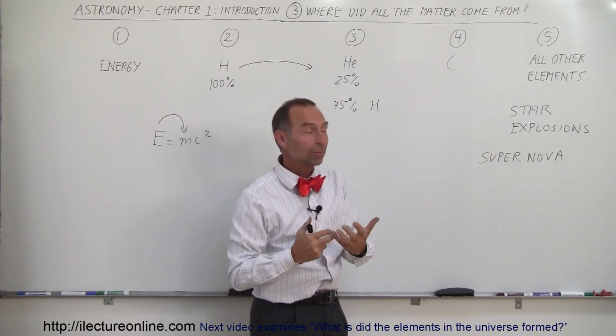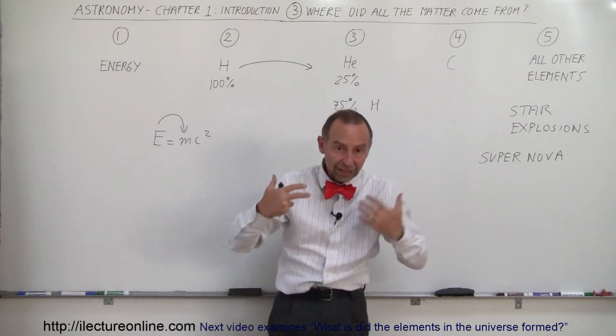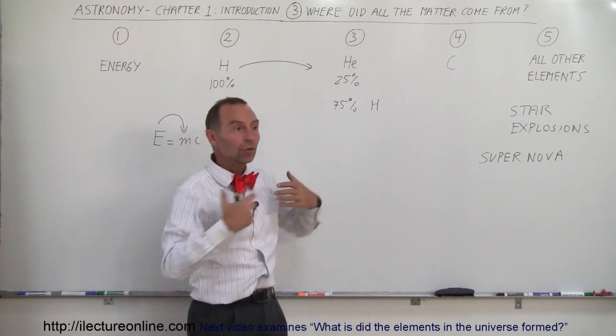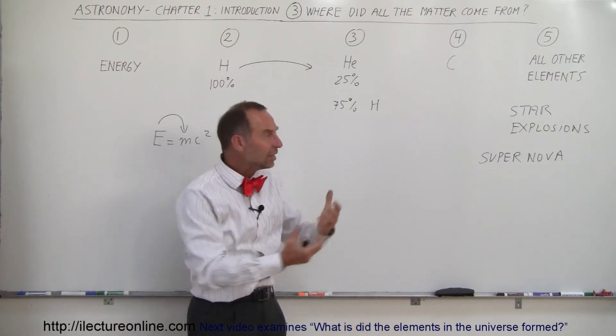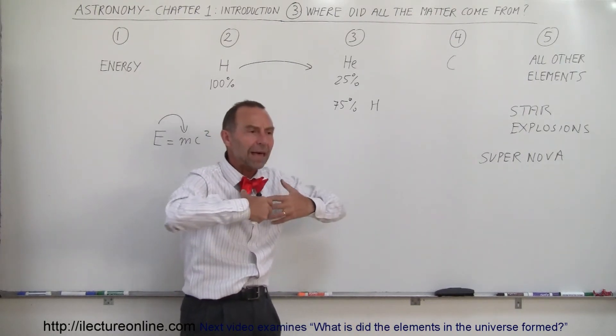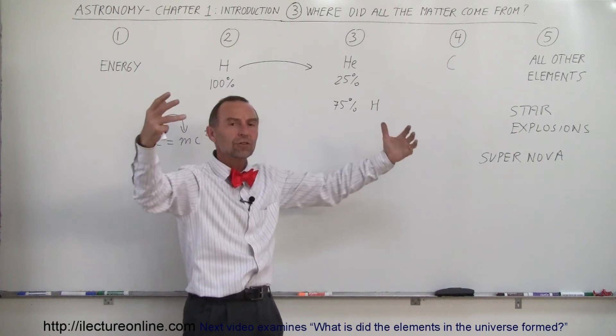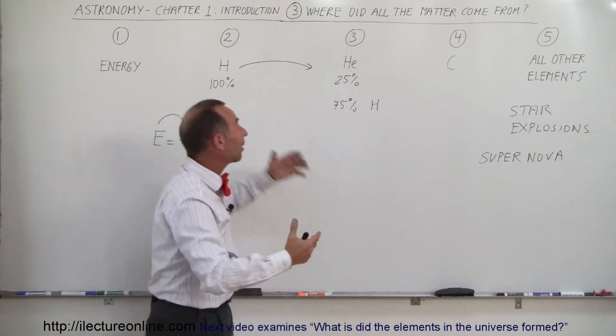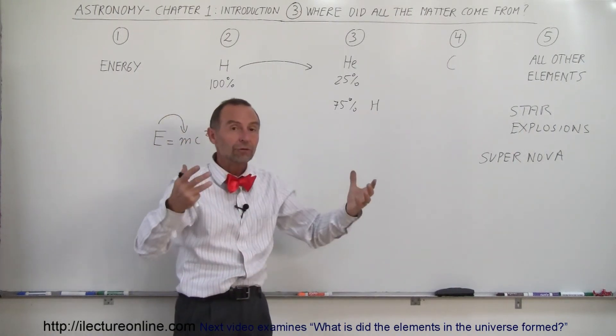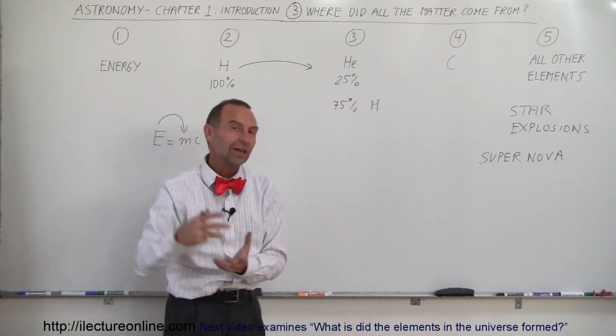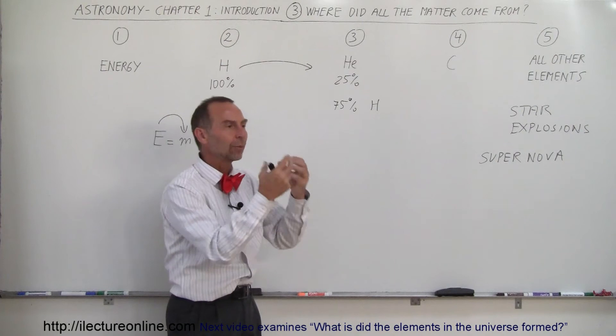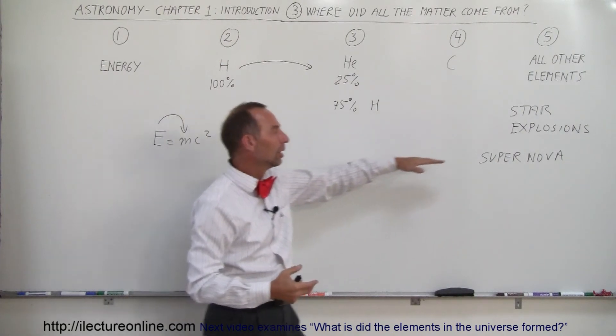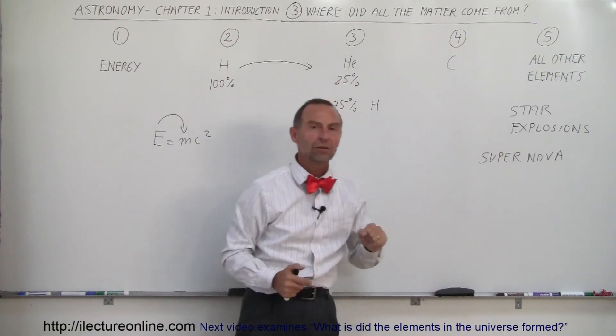Wow. That is an amazing process. So most of the elements that we're made out of, most of the elements that are around us on the Earth, those elements were created in these supernova explosions. And that matter then was sent out all over the universe, recombined with the hydrogen and helium that existed all around the universe, reformed new stars like our sun, and then around those new stars, planets could form that were then made of the material that was created in those supernova explosions.